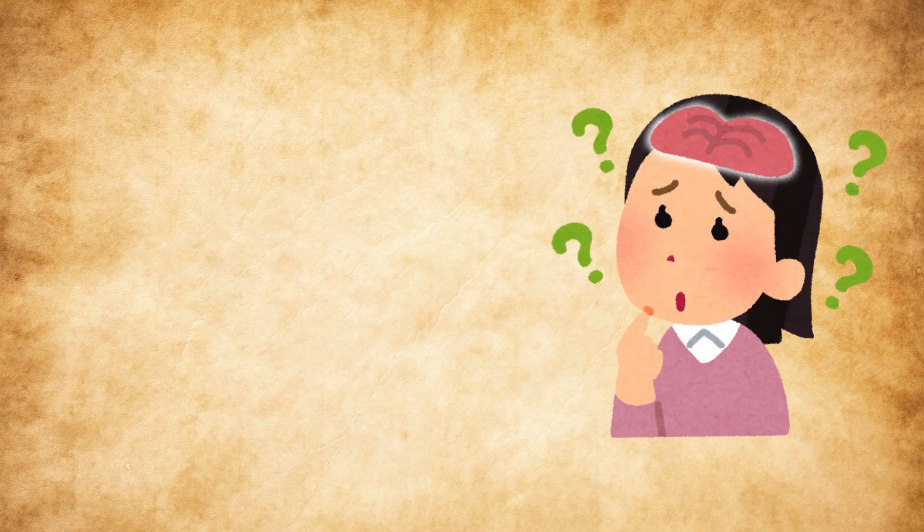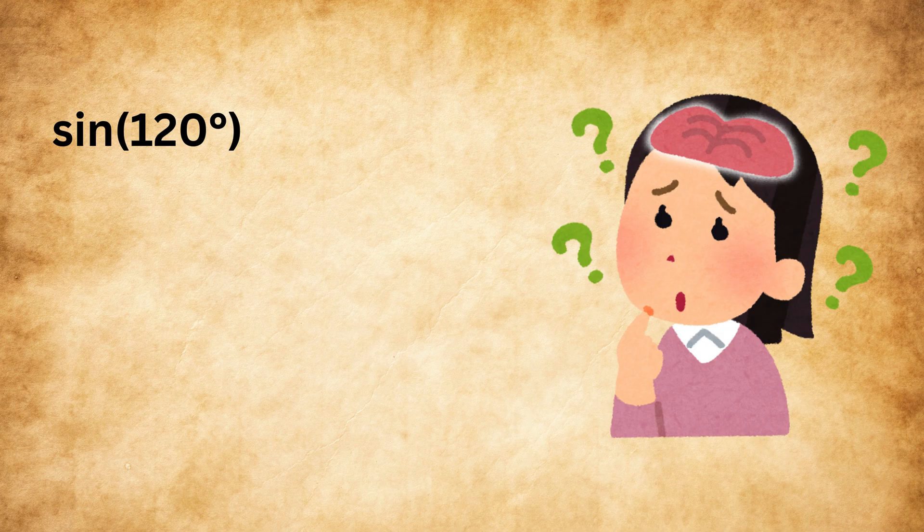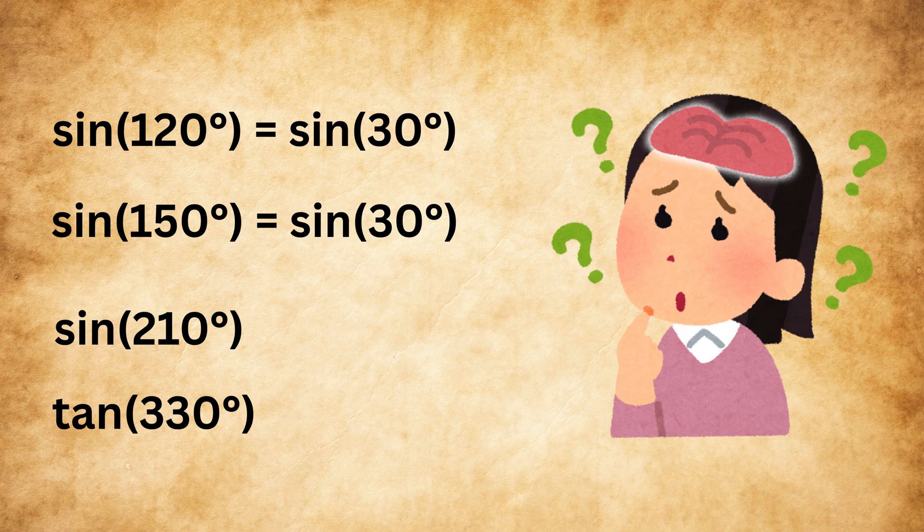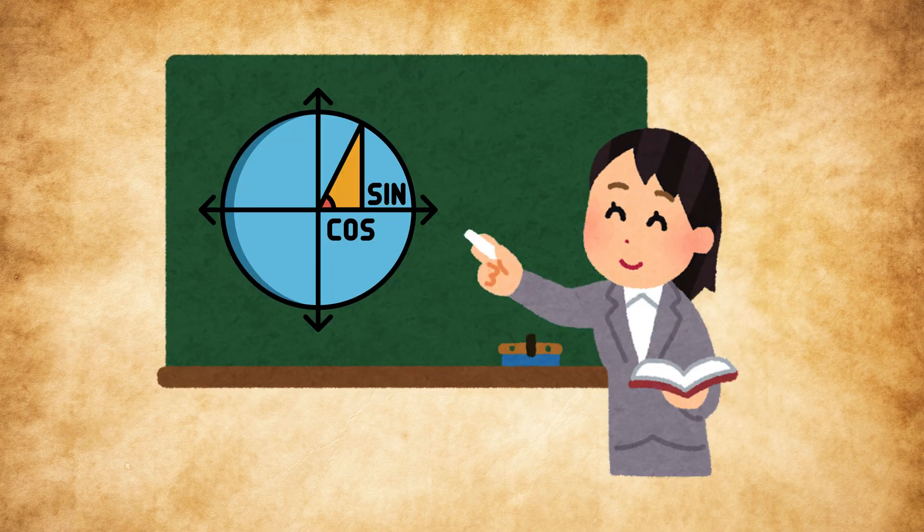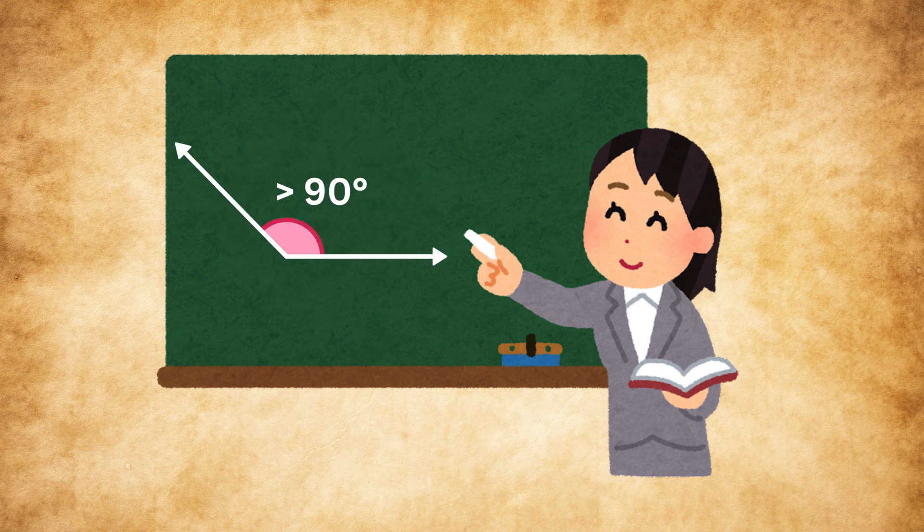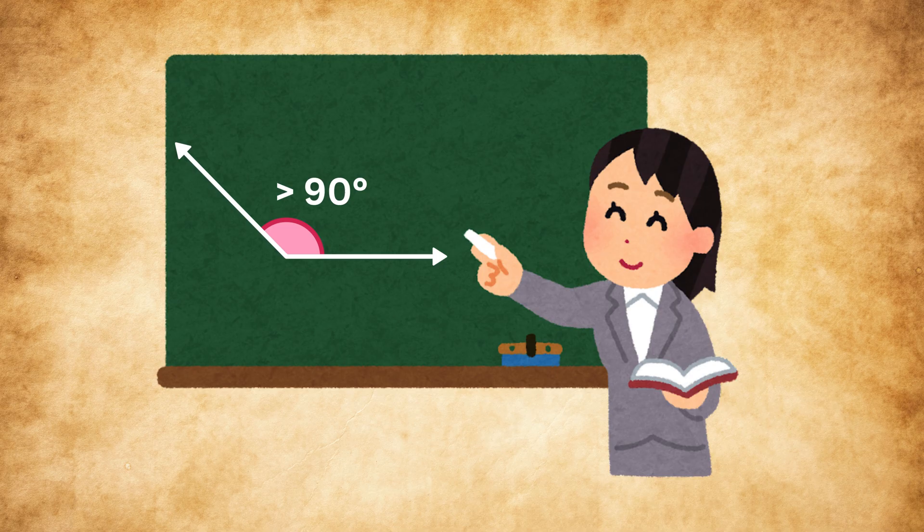But it becomes confusing to know whether sine 120 or sine 150 is equal to sine 30, or whether sine 210 or tan 330 should be taken as positive or negative. So today I'll explain step by step how to easily find trigonometric values for angles greater than 90 degrees.